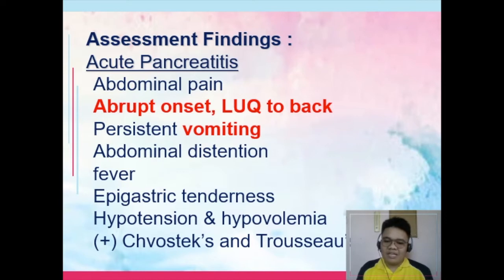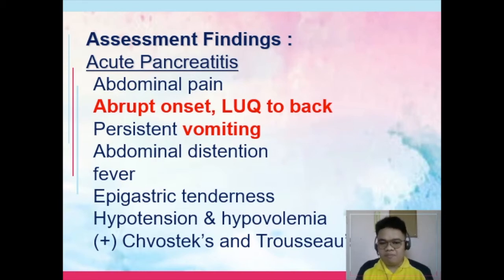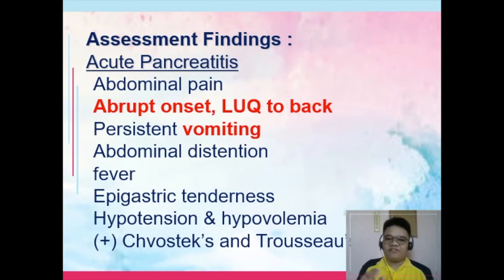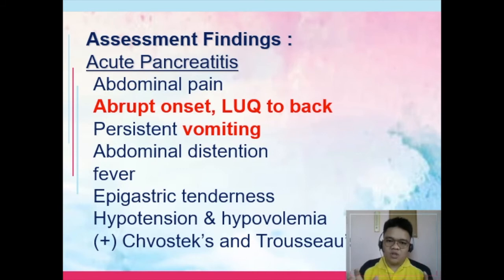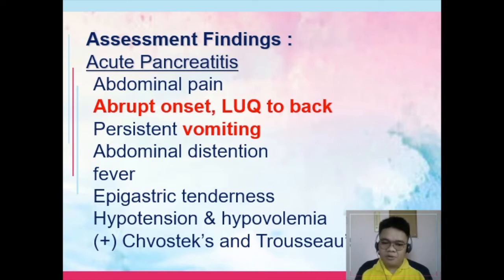Positive Chvostek and Trousseau signs are also present, pointing toward calcium imbalance — specifically hypocalcemia. This occurs because free fatty acids, due to lipase dysfunction, bind with calcium to form calcium soaps. Insoluble calcium salts deposit in the retroperitoneum, decreasing serum calcium levels, which leads to positive Chvostek and Trousseau signs.